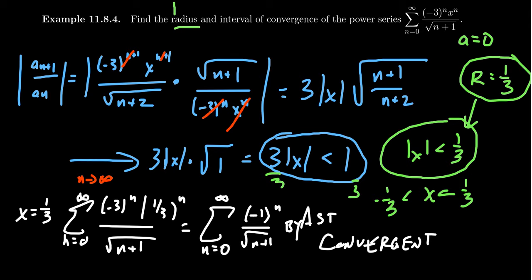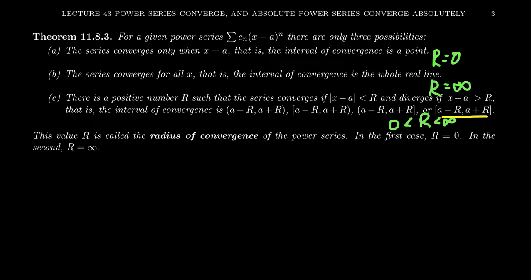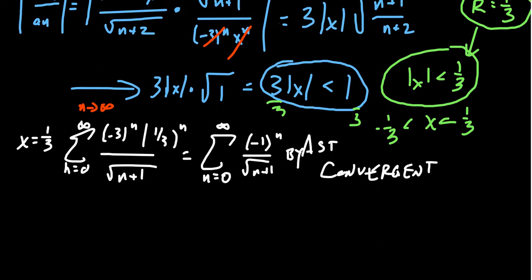For the interval of convergence so far, x lies between -1/3 and 1/3, with 1/3 included. We still need to check x = -1/3 separately. Don't assume that because one endpoint converges, the other necessarily diverges. Both could converge, only one could converge, or neither could converge — we have to investigate each endpoint individually.